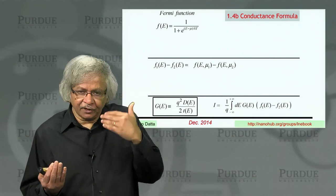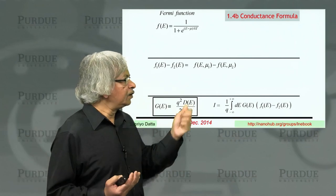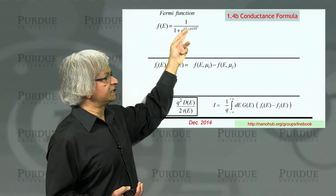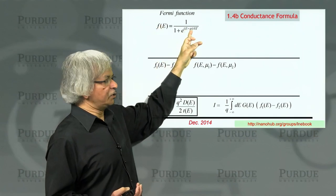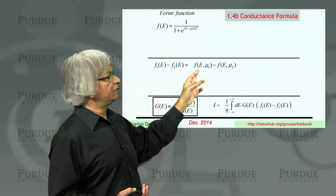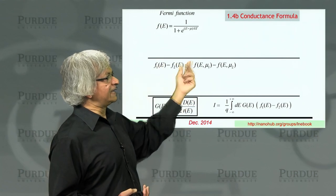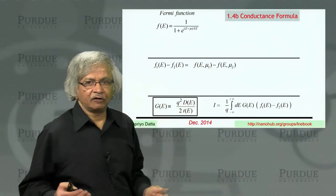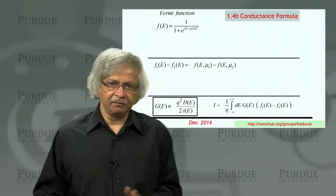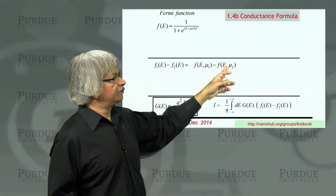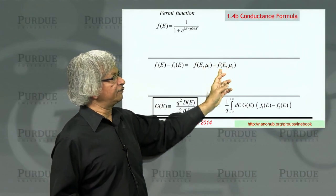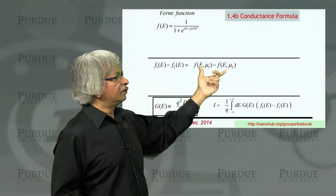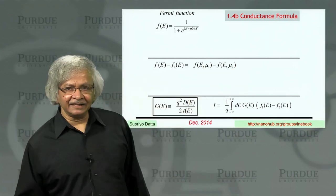Well, basically F1 is the Fermi function in contact 1, which depends on mu 1, because the Fermi function, as you can see, depends on mu. So we could think of F1 as the Fermi function with E comma mu 1, as if it's a function of two variables, E and mu 1. And the F2, you could think of as E comma mu 2.